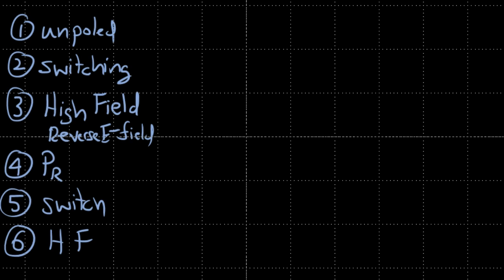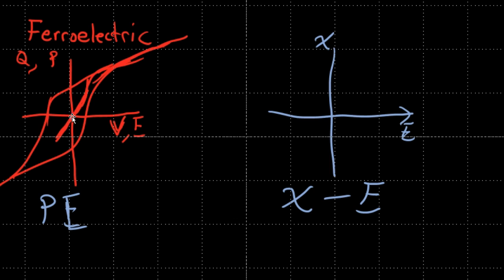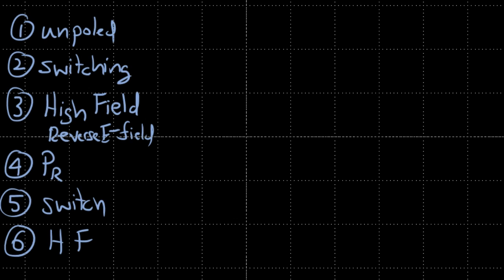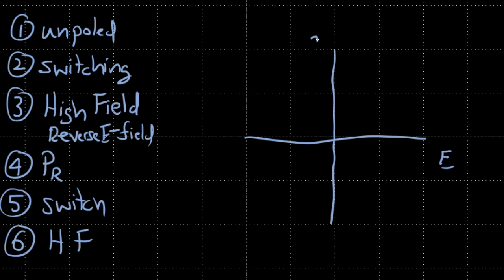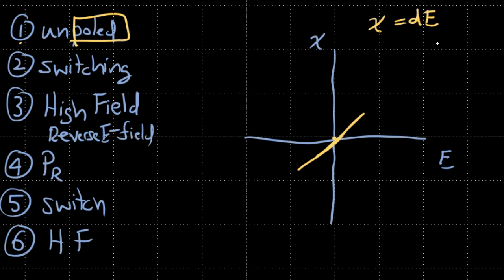Let's look at all these steps for a piezoelectric material that has already been polled. If it's not polled, we start from zero polarization and electric field. As we increase the electric field, we develop polarization. Let's assume we start with a polled material — it doesn't matter much whether you start polled or unpolled; the end result is the same, just the path differs. For a polled piezoelectric material, strain equals the D coefficient times E. This is the fundamental relationship — if no external stresses are applied, this is what you get.